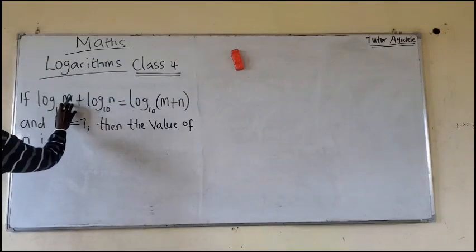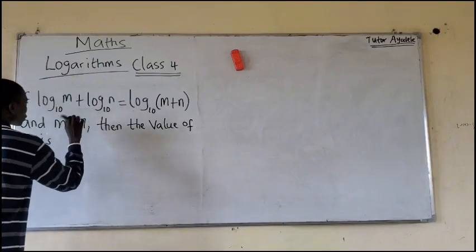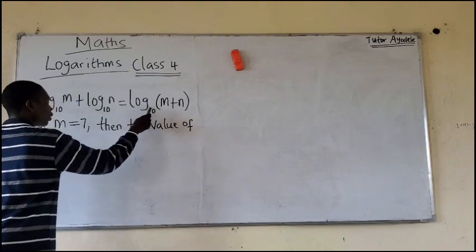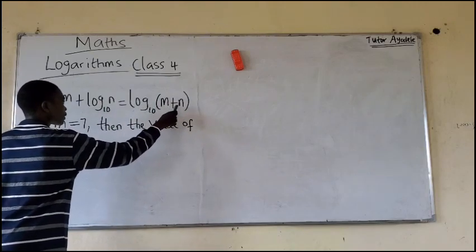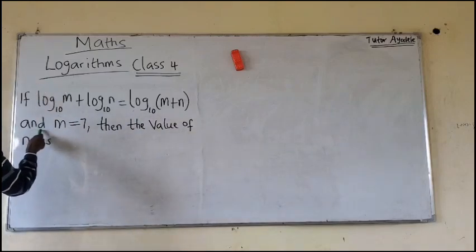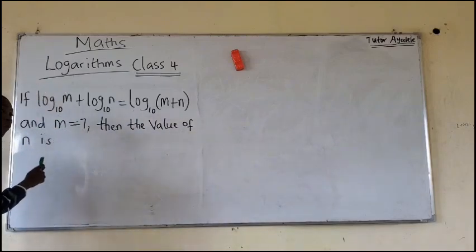If log M base 10 plus log N base 10 equals log (M plus N) base 10, and M equals 7, then the value of N is what?